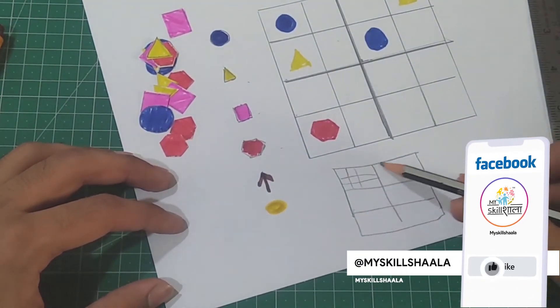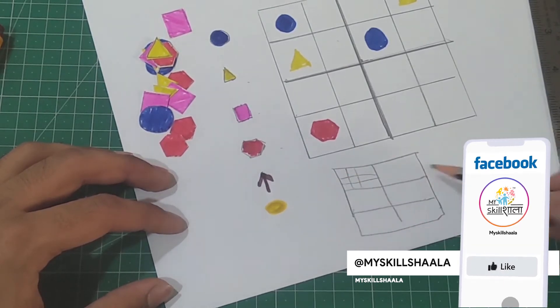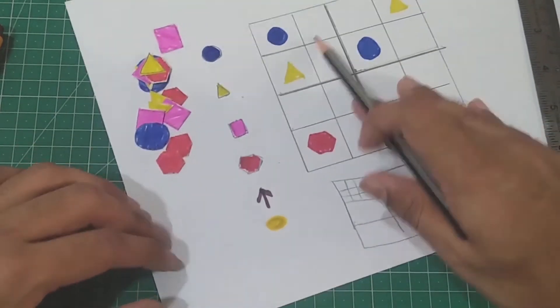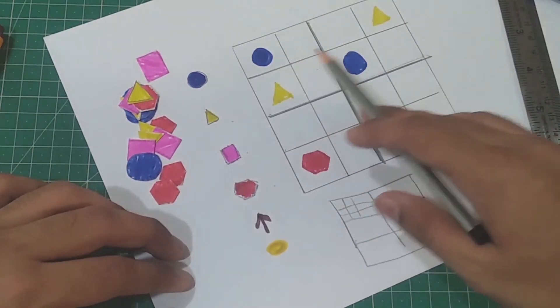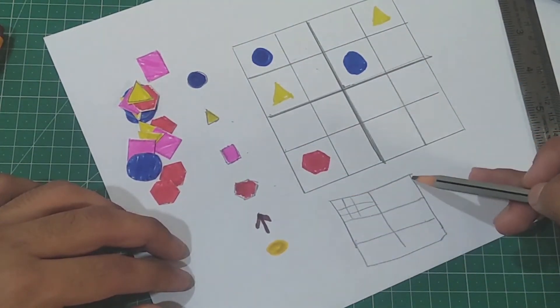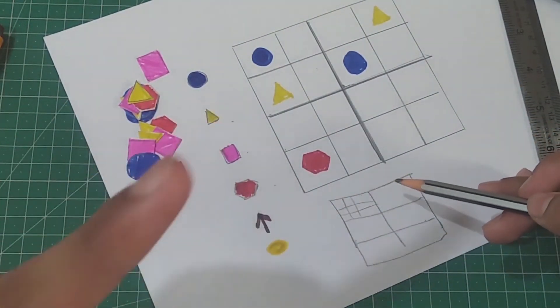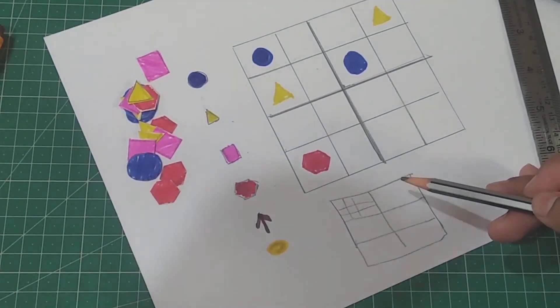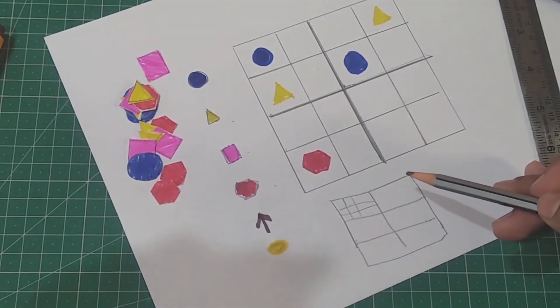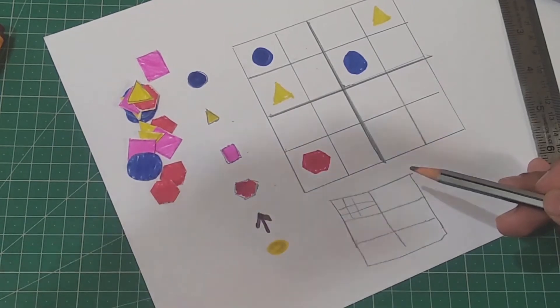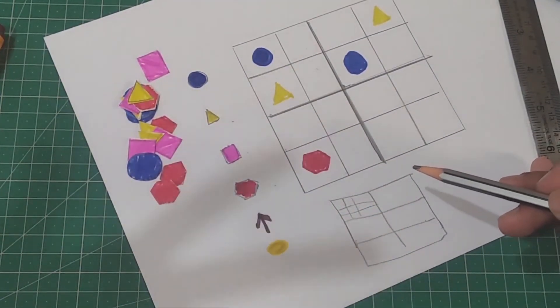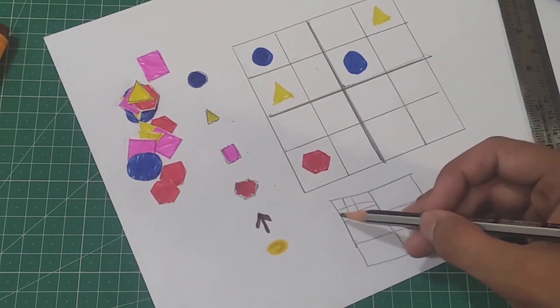So in that case you cannot have more than six shapes in a row, similar to which we had four shapes in a row. You cannot have more than six shapes individually in one vertical or horizontal line. You can have only a single shape of the same type. You cannot have more than one square or more than one triangle, and similarly in this box.